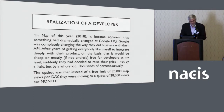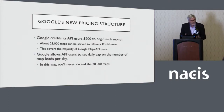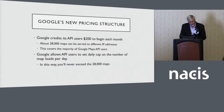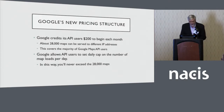The new quota is 28,000 maps served to different IP addresses per month. That would probably cover the majority of people who use a Google Map — and Google Maps are used on something like 4.5 billion different websites. Google allows API users to set a daily cap on the number of map loads per day so you never exceed 28,000 maps and are never charged.